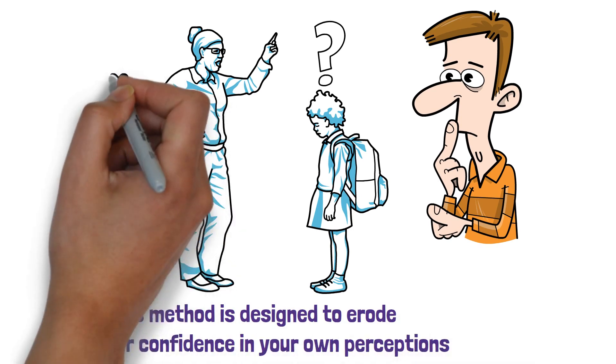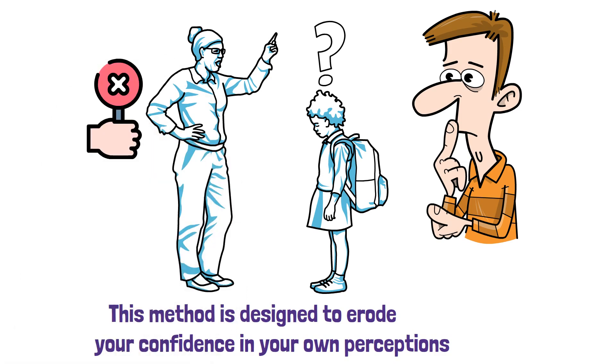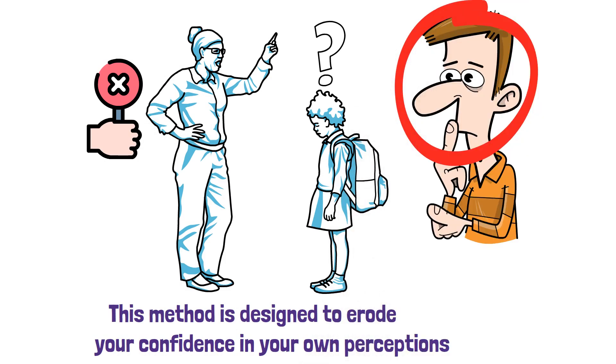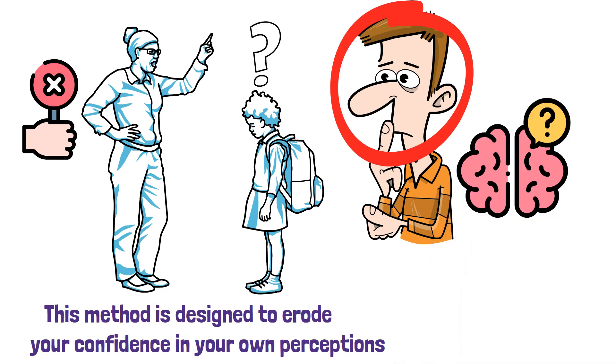They might employ phrases like, that never happened, or you're remembering it wrong. The danger of gaslighting is that it's often subtle. If you ever find yourself thinking, am I going crazy, or is my memory that bad, you could be a victim of this devious tactic.